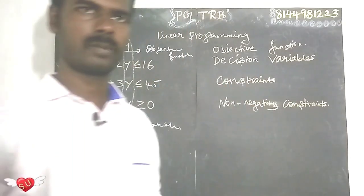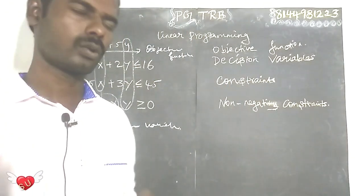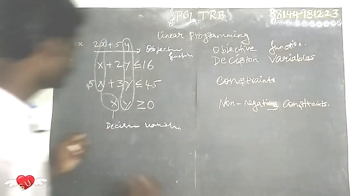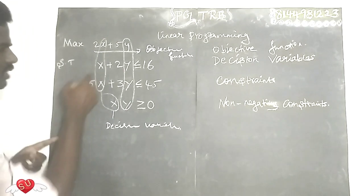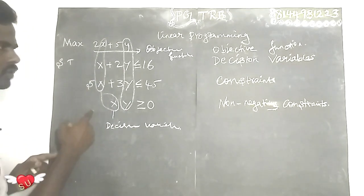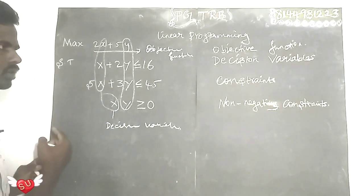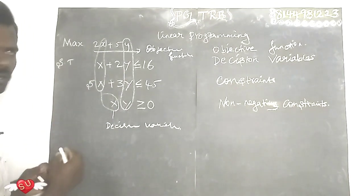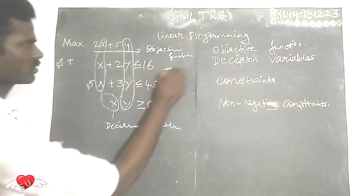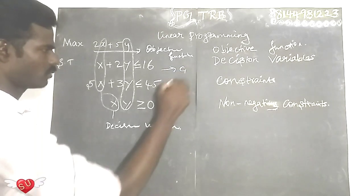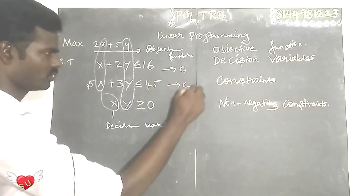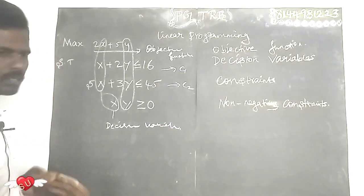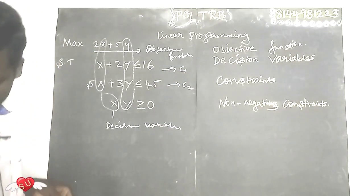Next, constraints. Constraint is the same. So the equations are inequality equations. This is the constraint — for example, c1, c2.